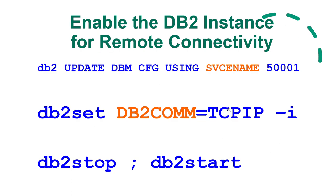At the database server level, update the DBM config using service name and set the port value you want DB2 to listen on. Then set the registry variable DB2COMM to TCPIP using 'db2set DB2COMM=TCPIP'. Stop and start your instance to make those settings effective. Once done, your database server is ready to accept remote connections.